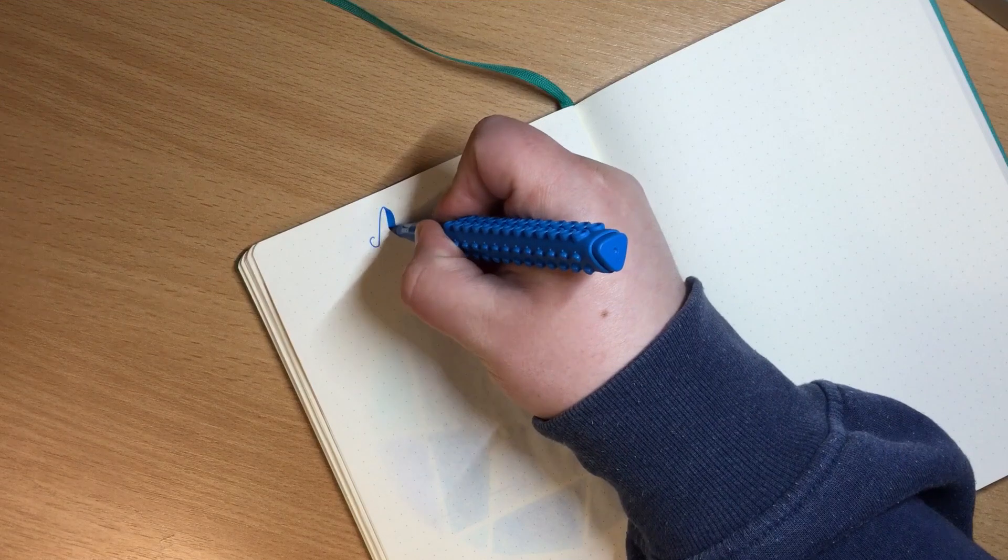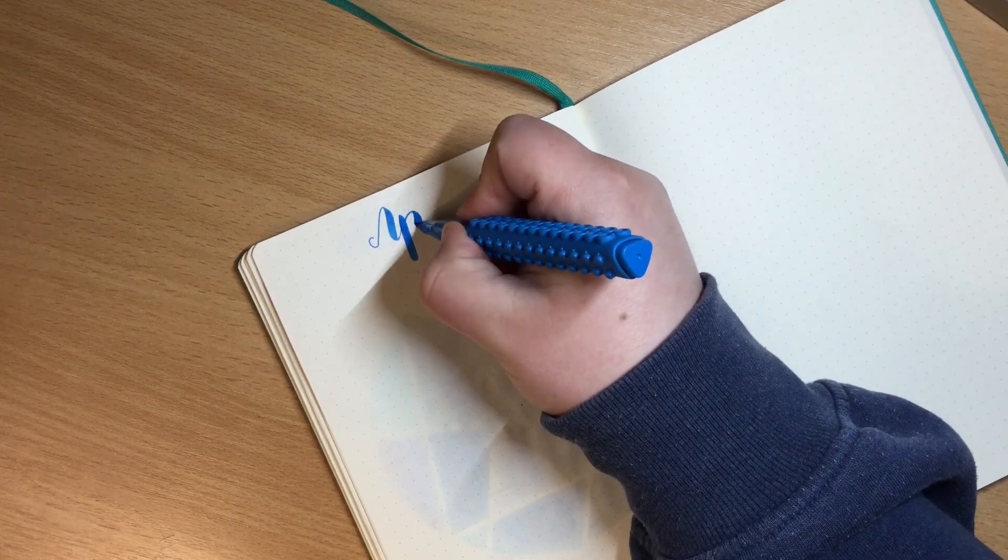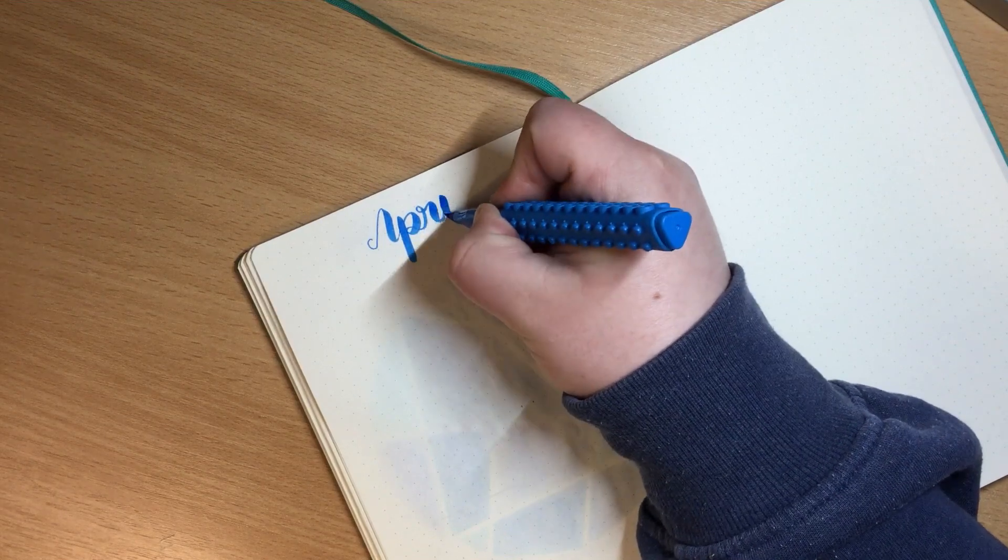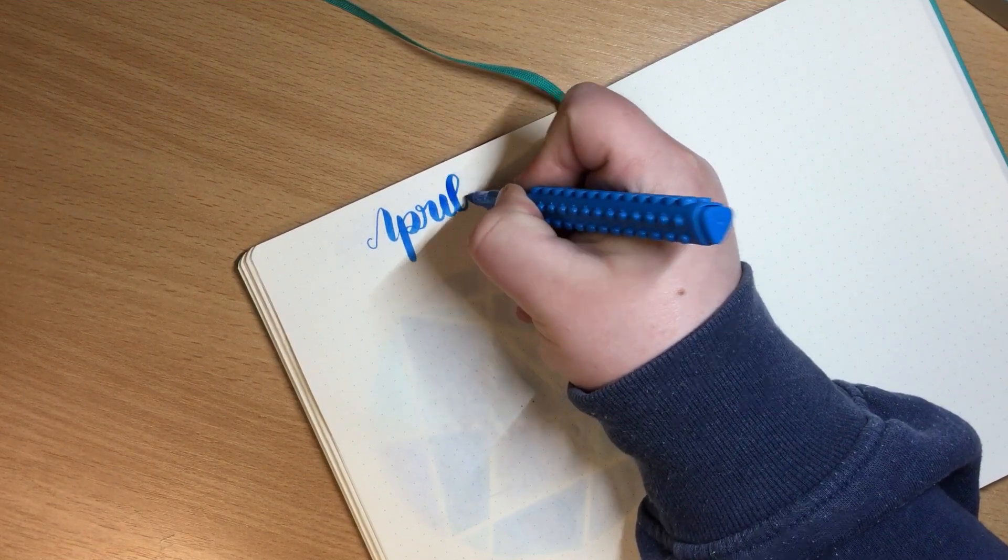Moving on I'm setting up the monthly log for the month of April using my Artline sticks brush pen in the sky blue color and my Pitt artist pen in the small size.